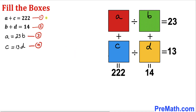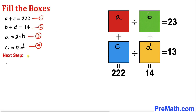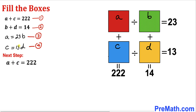So we have ended up with these four equations and we are going to manipulate them to find the values of A, B, C, and D. Let's focus on equation one: A plus C equals 222. We know that A equals 23B and C equals 13D, so substituting those values gives us 23B plus 13D equals 222. Let me call this equation number five.